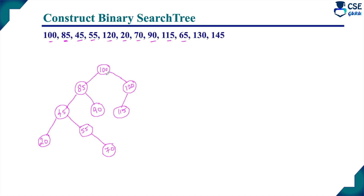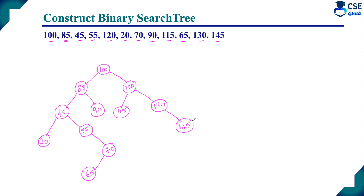Next is 65. Compare with root 100 — lesser; go left. Compare with 85 — lesser; go left. Compare with 45 — greater; go right. Compare with 55 — greater; go right. Compare with 70 — 65 is lesser than 70, so attach 65 as the left sub-tree element of 70. Next element is 130. Compare with root 100 — greater; go right. Compare with 120 — greater, so attach 130 as the right sub-tree element of 120. Next element is 145. Compare with root 100 — greater; go right to 120, then right to 130 — 145 is greater than 130, so attach 145 as the right sub-tree element of 130.